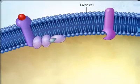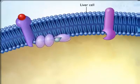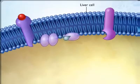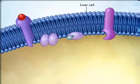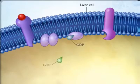The binding of epinephrine to its receptor protein causes one of the G protein subunits to dissociate from the other two. The G protein subunit which dissociates from the others carries a GDP, which is replaced by GTP when the subunit is activated.